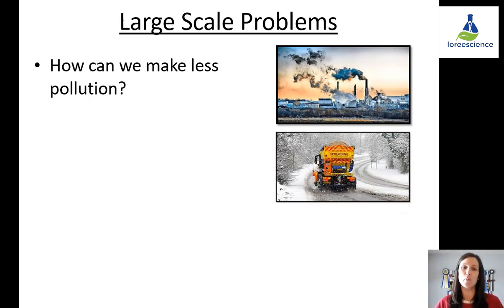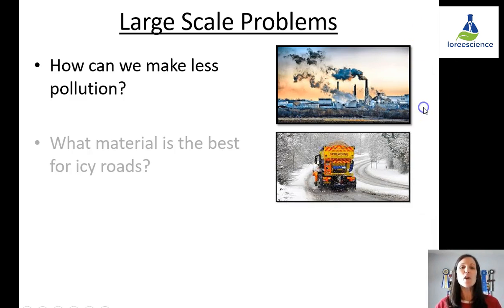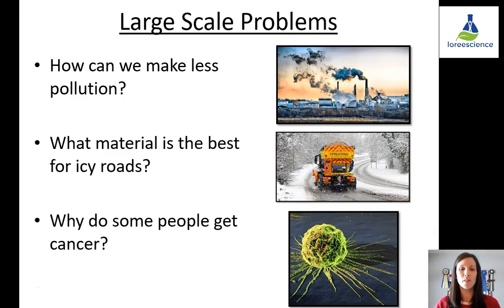There are large scale problems such as how can we make less pollution? These are things that lots of people are involved with. Even the entire country or the entire world are asking these questions. There are also large scale problems like what material is the best for icy roads? Here in Windsor, they're looking at replacing salt with beet juice. So that's a question that is large scale because it's an entire city trying to come up with a solution. Why do some people get cancer? This is a question that a lot of scientists are asking and trying to find an answer to.